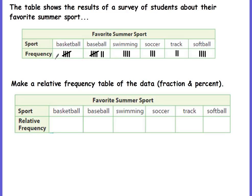Basketball — five people chose that as their favorite summer sport. Seven people chose baseball, four people swimming, three people soccer, two people track, and four people softball. We want to make a relative frequency table of this data where we're going to write both the fraction and the percent.